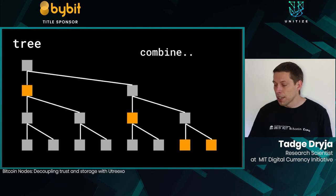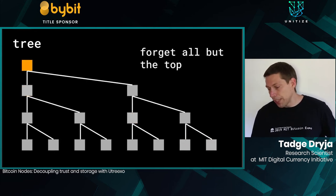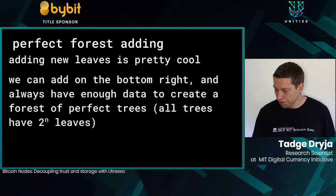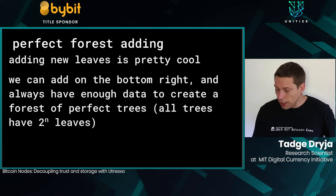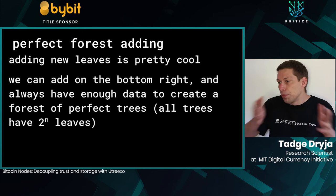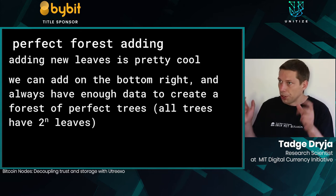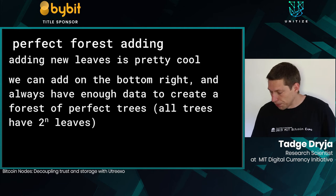In practice, you store log-base-two-over-two roots because sometimes you don't have to store certain ones. Adding elements is straightforward: you add on the right and batch things together whenever items are on the same row, hashing them together in a standard Merkle tree construction, ending up with log(n)/2 roots.